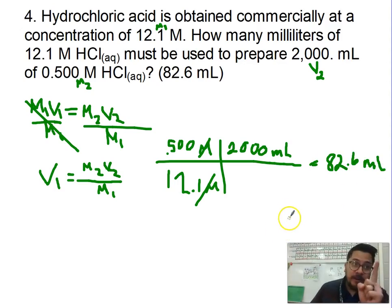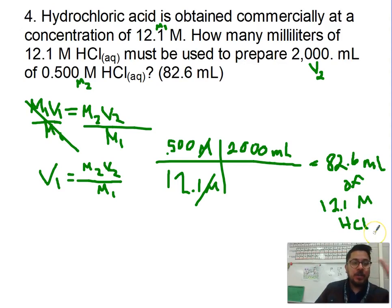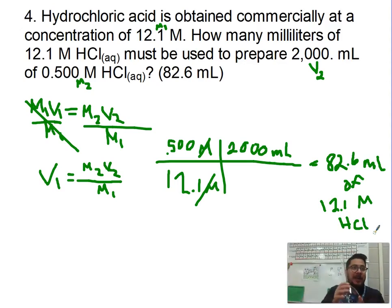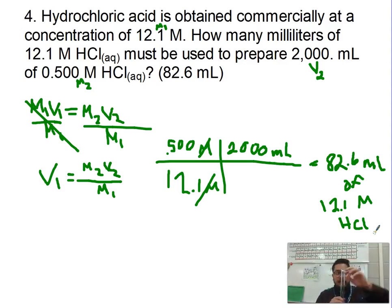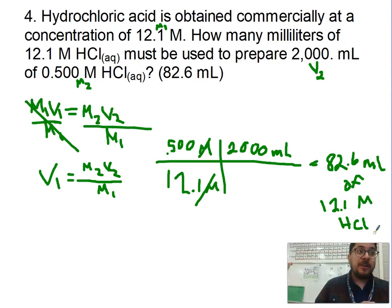82.6 milliliters is Volume One, which goes with Molarity One. So the answer is 82.6 milliliters of the 12.1 molarity HCl. You would measure out 82.6 mL using a graduated cylinder, add it to a 2,000 milliliter beaker, then fill the rest all the way to the line with water. That's Solution Number Two. The dilution part is a bit easier than the first part, but you still have to do the math.